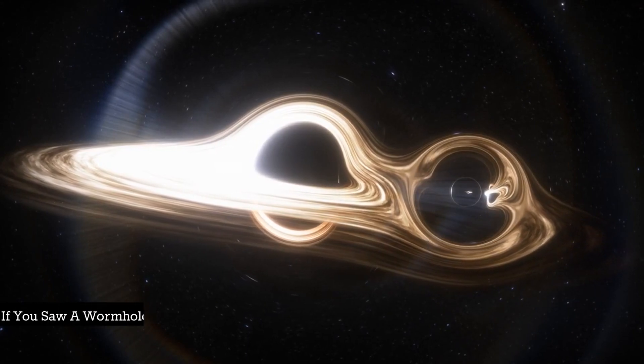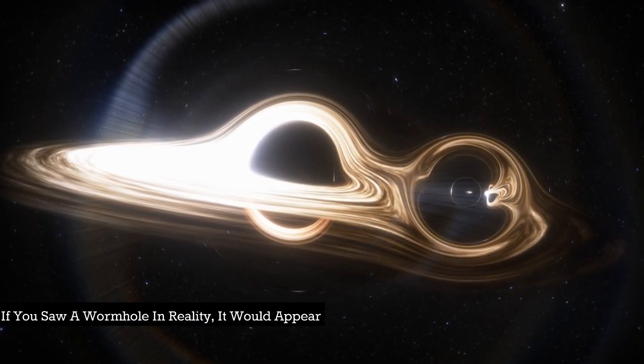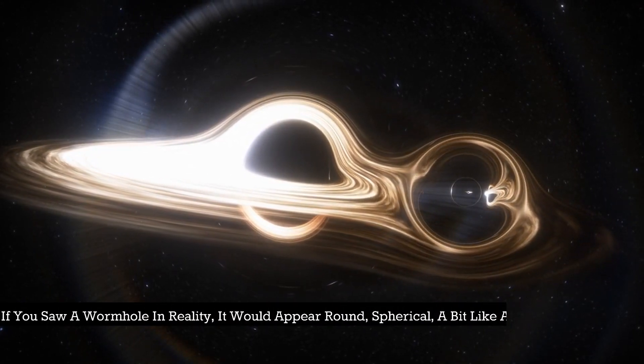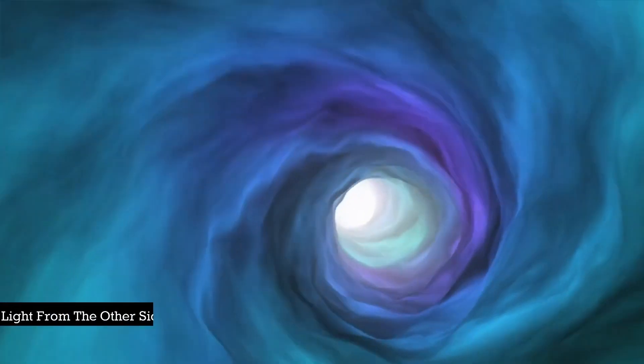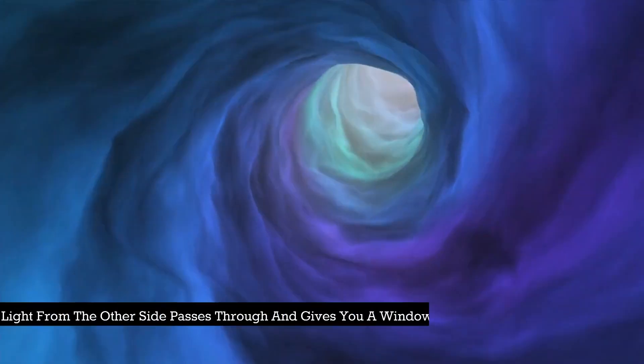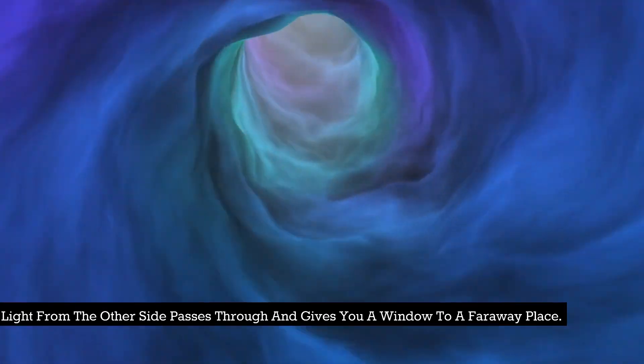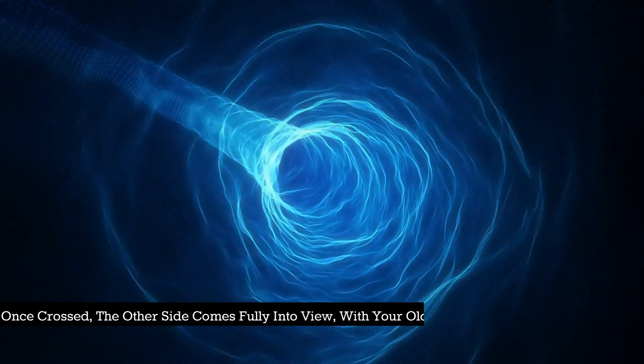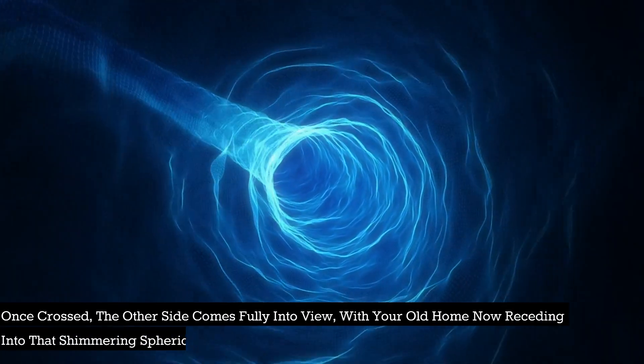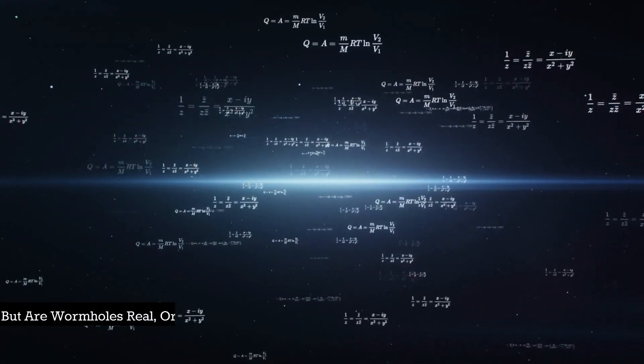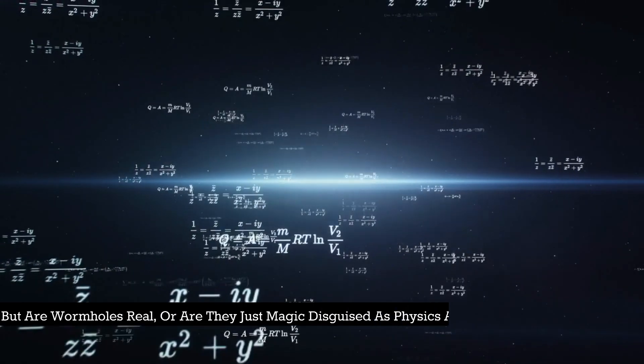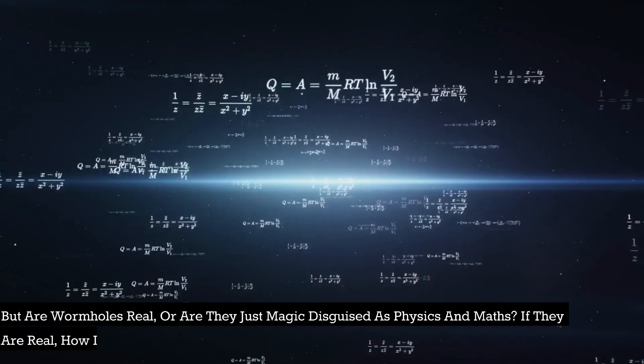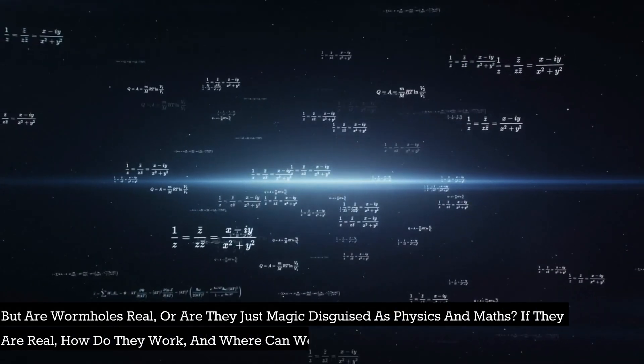If you saw a wormhole in reality, it would appear round, spherical, a bit like a black hole. Light from the other side passes through and gives you a window to a faraway place. Once crossed, the other side comes fully into view with your old home now receding into that shimmering spherical window. But are wormholes real, or are they just magic disguised as physics and maths? If they are real, how do they work and where can we find them?